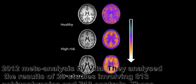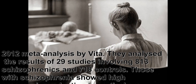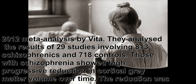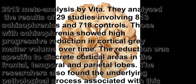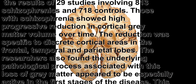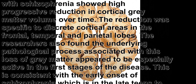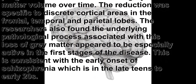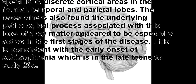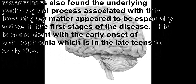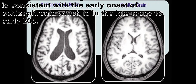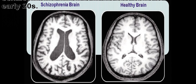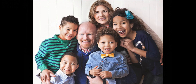Further support comes from a 2012 meta-analysis by Vita, who analyzed results from 29 studies involving 813 schizophrenics and 718 controls. Those with schizophrenia showed high progressive reduction in cortical gray matter volume over time, specific to discrete cortical areas in the frontal, temporal, and parietal lobes. The underlying pathological process appeared especially active in the first stages of the disease, consistent with early onset in the late teens to early 20s. Finding neural correlates is important as early detection might prevent the development of later stages of the disorder.